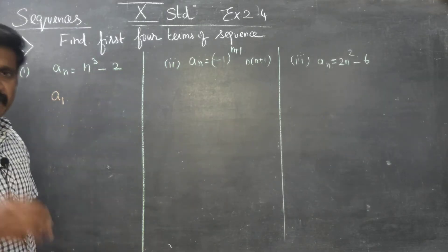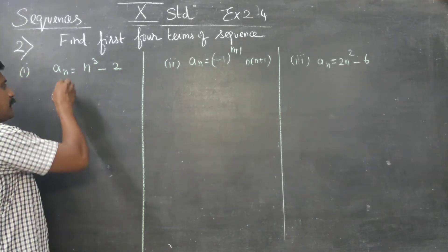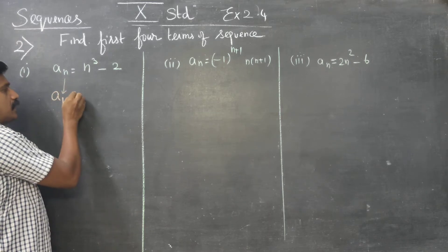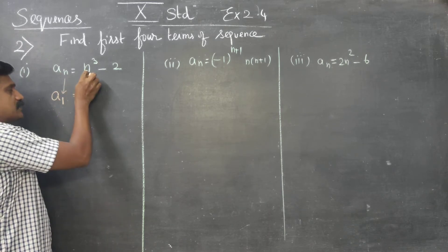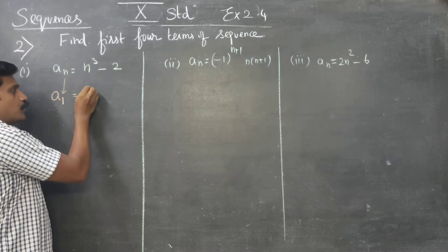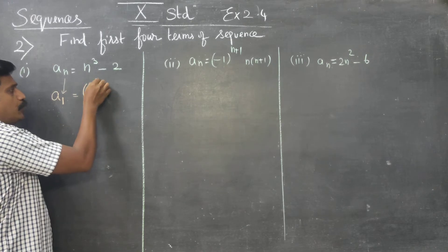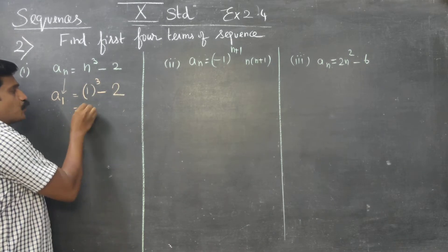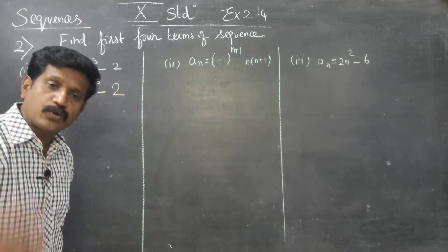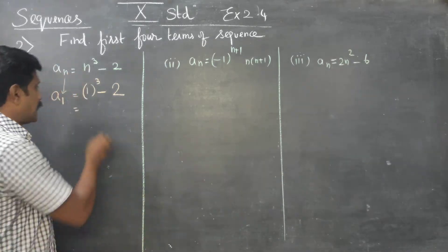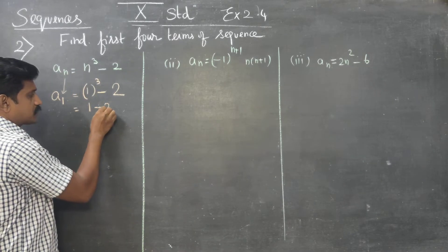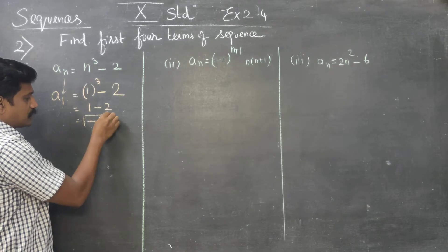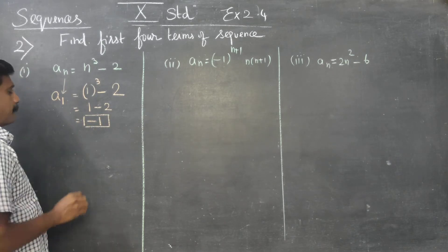For A1, put n = 1: that is 1 cube minus 2. What is 1 cube? 1 into 1 into 1, answer is 1 minus 2. Therefore my answer is minus 1. That is A1.